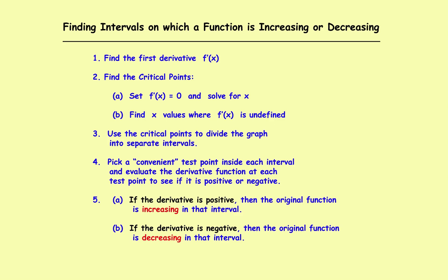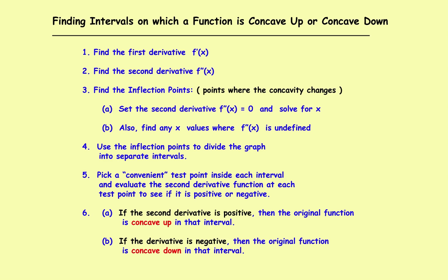Look how similar this series of steps is to the process involved in finding concavity. If you're looking for intervals where it's concave up or concave down, the only difference is that rather than using the first derivative and critical points, you're going to use the second derivative and inflection points. An inflection point is where it switches from concave up to concave down or concave down to concave up, and inflection points occur where the second derivative is equal to zero.